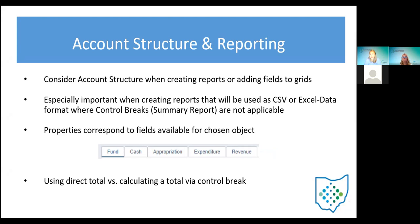The next topic we'll move into is talking about the account structure and how that connects to reporting. All these pieces are things we talk about in our beginner training, but this is our opportunity to talk about how these things work together and some things to think about when you are adding certain pieces to grids or reports. When you're creating reports that will be used in CSV or Excel format, it's important to consider which fields you're pulling from accounts onto reports — like a budget summary or appropriation summary.